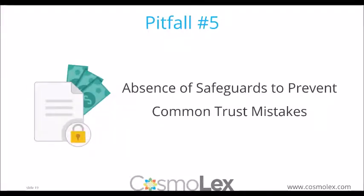Pitfall 5: absence of safeguards. This blends overdraft, commingling, and duplicate checks. Software tools can help enormously in remaining compliant, but they need to be legal-specific trust accounting tools. If you're using something generic or a manual method, nothing will prevent you from writing a larger check or having a duplicate check number. Think about whether you want to take that responsibility on yourself every day, or have a system that forces those rules.